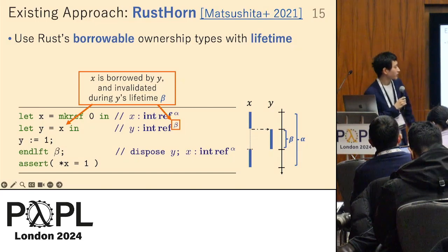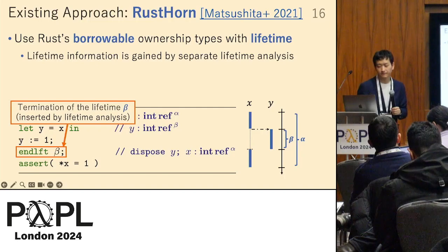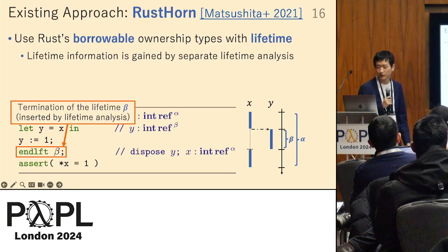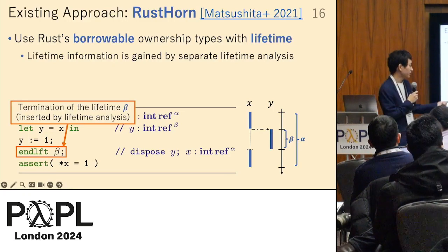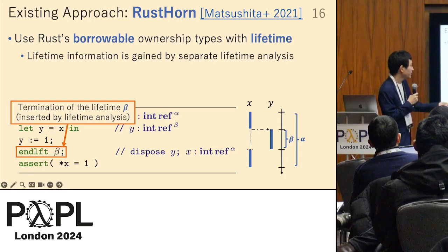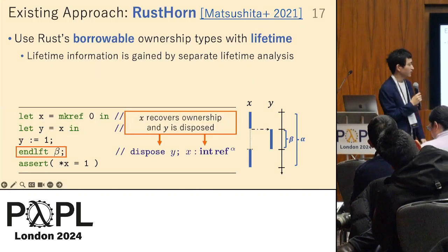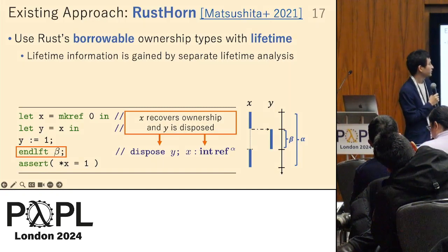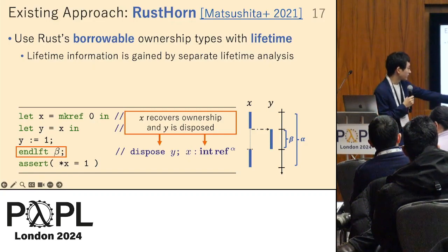During this borrowing, the Rust type system disables the type of x. There is an annotation of lifetime beta, meaning that y's lifetime beta ends at that point — inserted by the lifetime analysis in the Rust compiler. This enables the Rust type system to dispose of the reference y and re-enable the type of x so it can be used again.